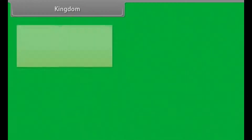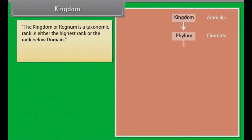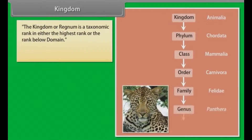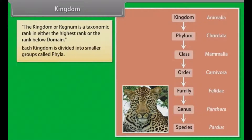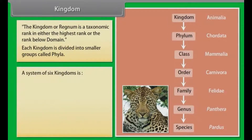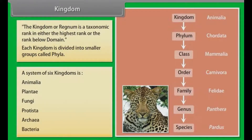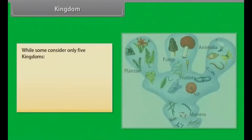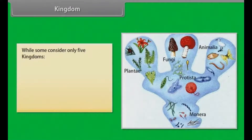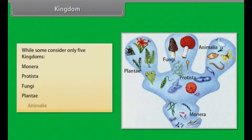The kingdom, or regnum, is a taxonomic rank — either the highest rank or the rank below domain. Each kingdom is divided into smaller groups called phyla. A system of six kingdoms includes: Animalia, Plantae, Fungi, Protista, Archaea, and Bacteria. While some consider only five kingdoms: Monera, Protista, Fungi, Plantae, and Animalia.